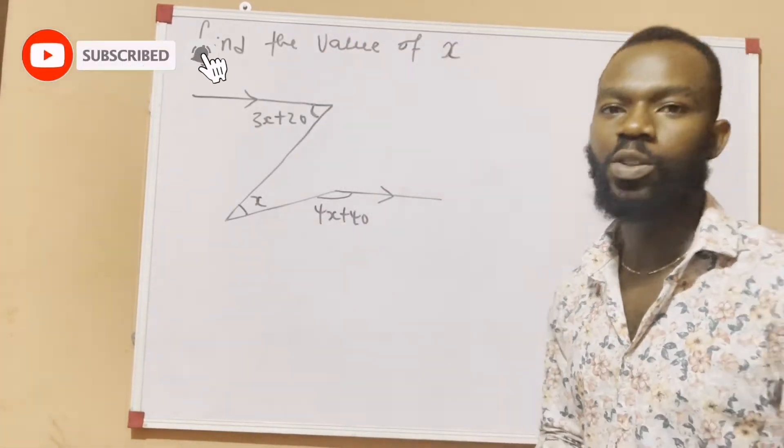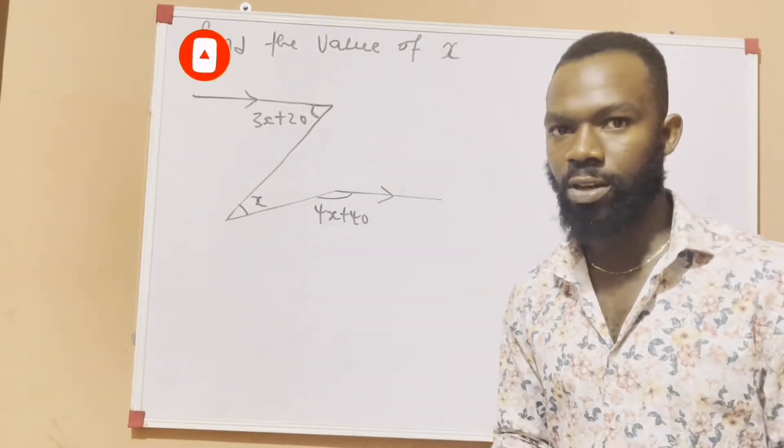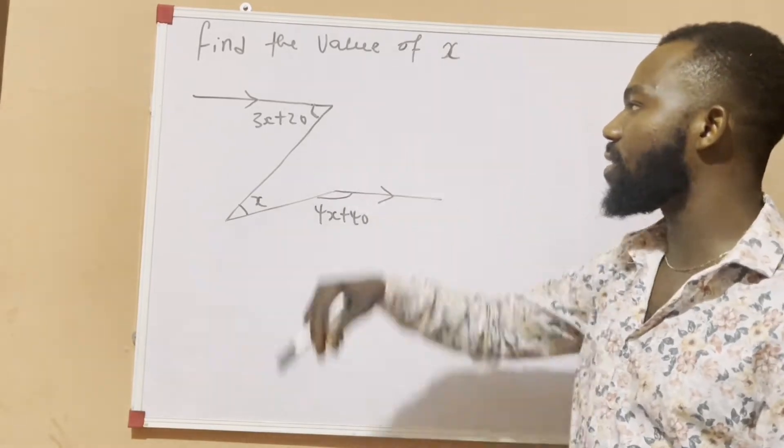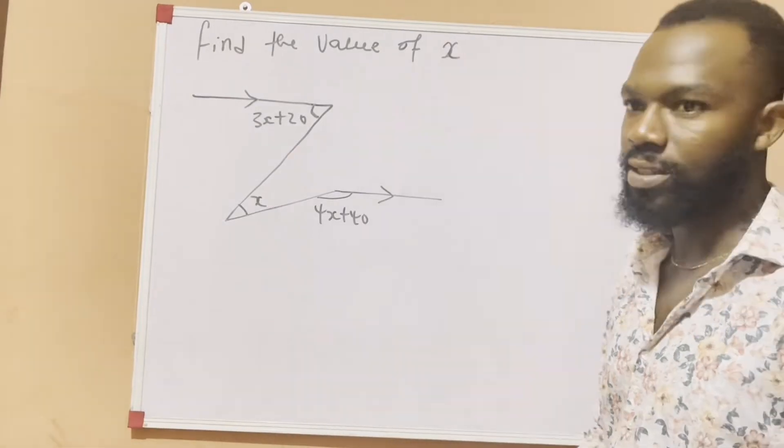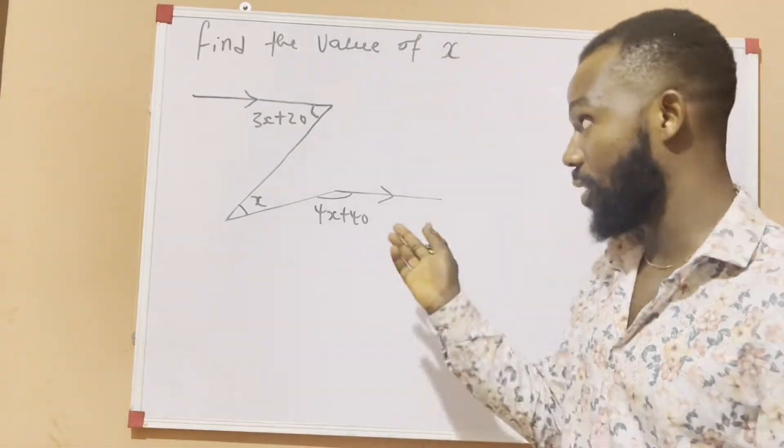And today we have a question we are going to discuss. Now, my latest question is on plane geometry. Under the equation cell, we should find the value of x given this diagram. But mind you, this line and this line, they are parallel lines. So how can we solve for x given this type of question or given this type of diagram?